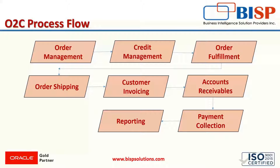Once the order is received, the credit is checked, which means there would be a check against the credit limit assigned to a particular customer. When the credit is managed for a particular customer, the order fulfillment takes place — the order would be shared with the dispatch team at the factory or warehouse. Order fulfillment consists of picking and packing, and when the order is fulfilled, it is shipped to the shipping address given by the customer.